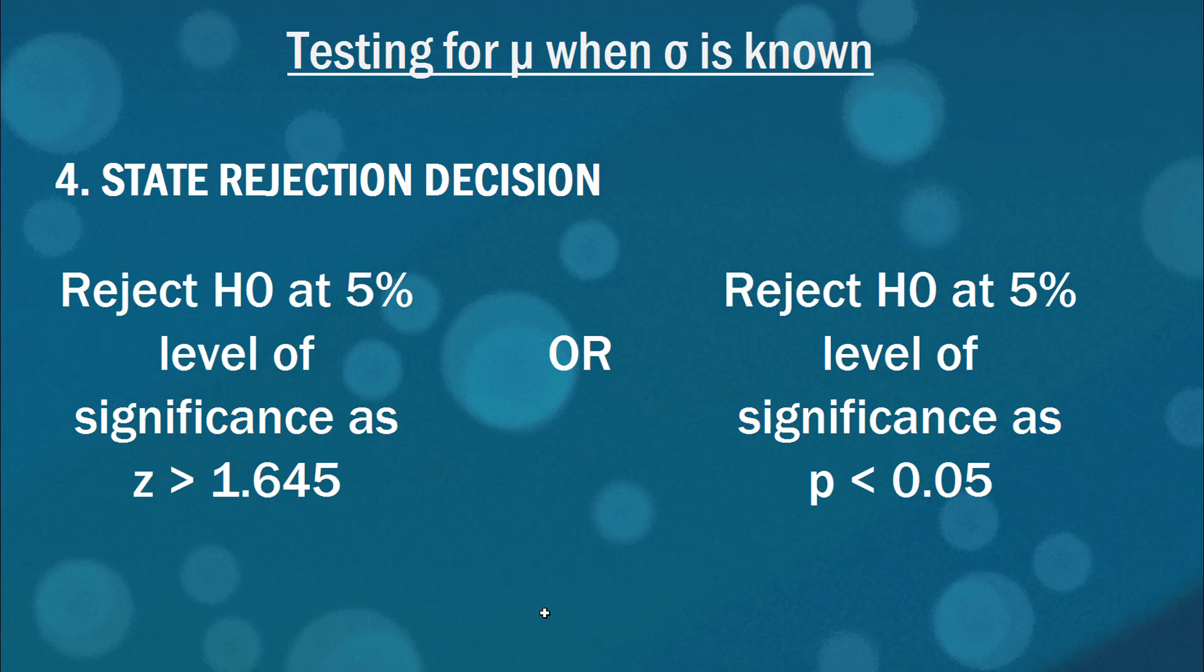Step four then is to state our rejection decision. So using the rejection region we calculated first, we can say that we reject the null hypothesis at the 5% level of significance, as Z is greater than 1.645. Or alternatively, given we've just calculated the P value, again, we can say that we reject the null hypothesis at that level of significance as P is less than 0.05. And with P values, we know that we reject the null hypothesis if P is less than the level of significance, which in this case is 5%. Now appreciate that these two methods of stating your rejection decision will always be in agreement with one another. They're exactly the same test just looked at from a different perspective. This one looks at it from the perspective of the population mean or what we're testing it against. And this one comes at it from the point of view of the test statistic itself. And in either way, we're going to reject this null hypothesis.